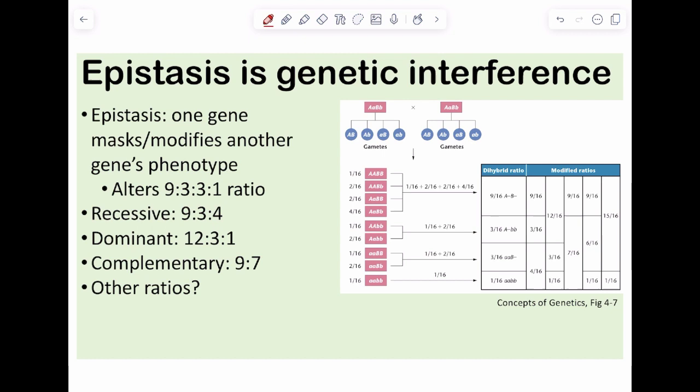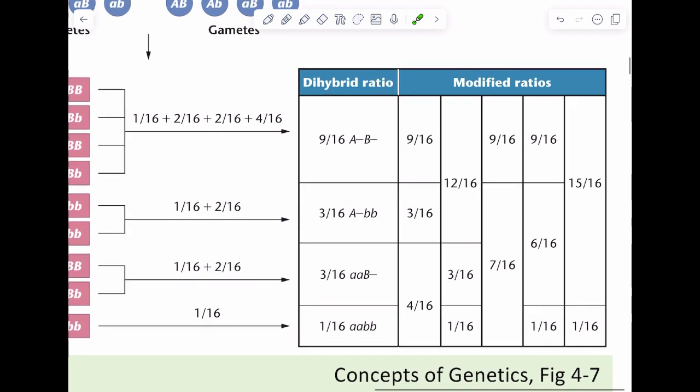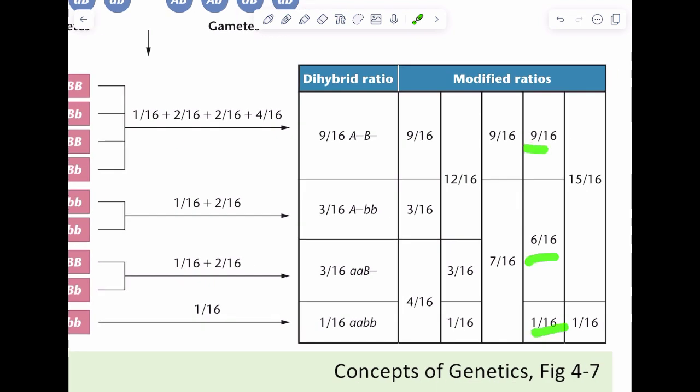Everything we're going to do is vary off of that 9-3-3-1. How can you vary? Well, if I were to take, for example, these two here and add them up, I can make a 4. I can get a ratio of 9 to 3 to 4. There's an explanation for that. Or I can take the 9 and the 3 and make a 12 to 3 to 1 ratio. Or I can take the 3, the 3, and the 1 and make a 9 to 7 ratio. Or I can make other ones like a 9 to 6 to 1. I can make a 15 to 1. There's a 15 to 0. There's a 13 to 3. We can make all sorts of different combinations based upon how these genes are interacting with each other.